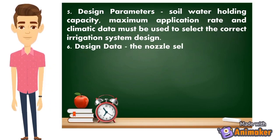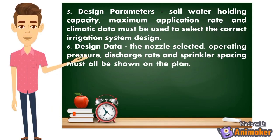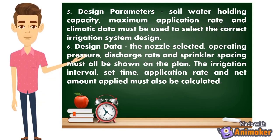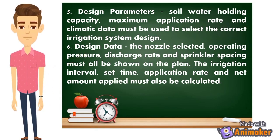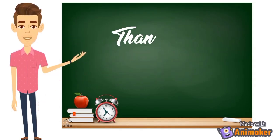Number six, design data — the nozzle selected, operating pressure, discharge rate, and sprinkler spacing must also be shown on the plan. The irrigation interval, set time, application rate, and net amount applied must also be calculated. Talagang specific yung kailangan mo sa pagdidesenyo o pagpaplano, kaya ang lahat ng dapat isulat at kailangan natin ay dapat isama sa ating plano, which is included in our design data.